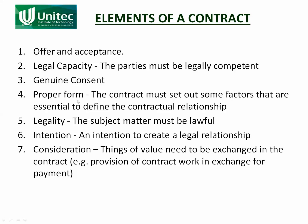Proper form. The contract must set out the factors that are essential — the essential elements — to define the contract relationship. You can't have a contract just saying you will build me a road from point A to point B, because it doesn't define exactly what needs to be built. You need to specify: the road needs to be 4 metres wide, 150 mils of base course, 150 mils of sub-base, made out of the following materials, done in this time period, and so on. The bulk of an engineering contract is to provide those essential elements — things like drawings and specifications — to define the contractual relationship.